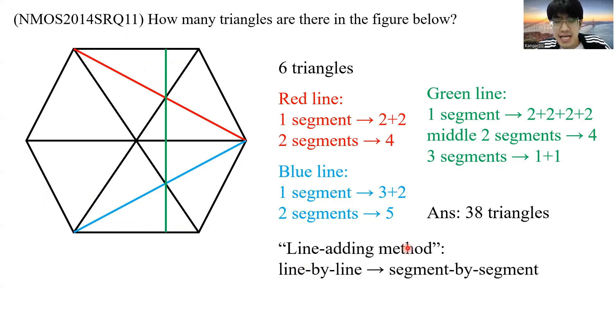And the trick is to add in these lines, line by line, one line after the other. And then in order for you to do this systematically, you have to go through every segment one by one. With one segment, how many new triangles can I form? With another one, how many triangles can I form? If I combine them, how many new triangles can I form? And this way, you can make sure that you never miss any triangles.